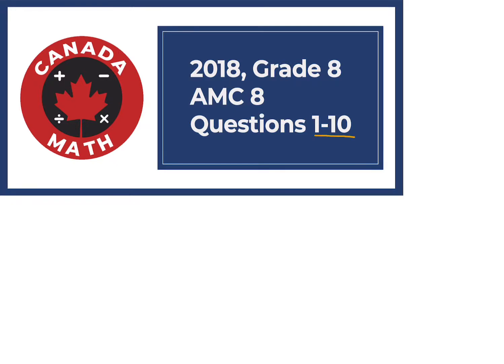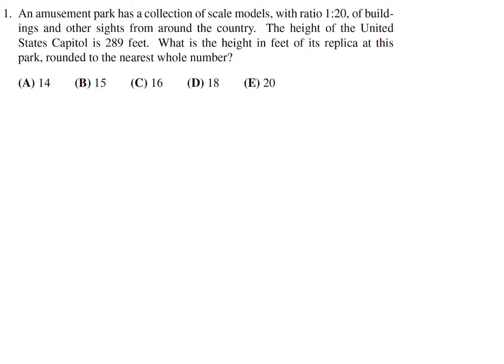Questions 1 through 10 on the 2018 grade 8 AMC 8. An amusement park has a collection of scale models with the ratio 1 to 20 of buildings and other sites from around the country. The height of the United States Capitol is 289 feet. What is the height in feet of its replica at this park, rounded to the nearest whole number? The ratio is 1 over 20, and that equals x over 289, where x is the height of the replica.